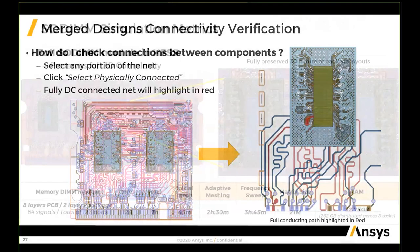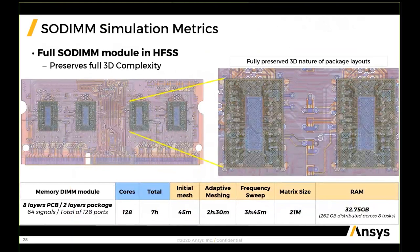This fully merged SODIMM design was solved on the cloud across 8 nodes with a total of 128 cores. We enabled one byte of data per each package, resulting in 64 active signals for a total of 128 ports. This fully merged design solved in 7 hours: the initial mesh took only 45 minutes, two and a half hours of adaptive meshing, and three and a half hours of distributed frequency sweep. Total matrix size was about 21 million unknowns, requiring only 32.75 GB of RAM per each distributed task.